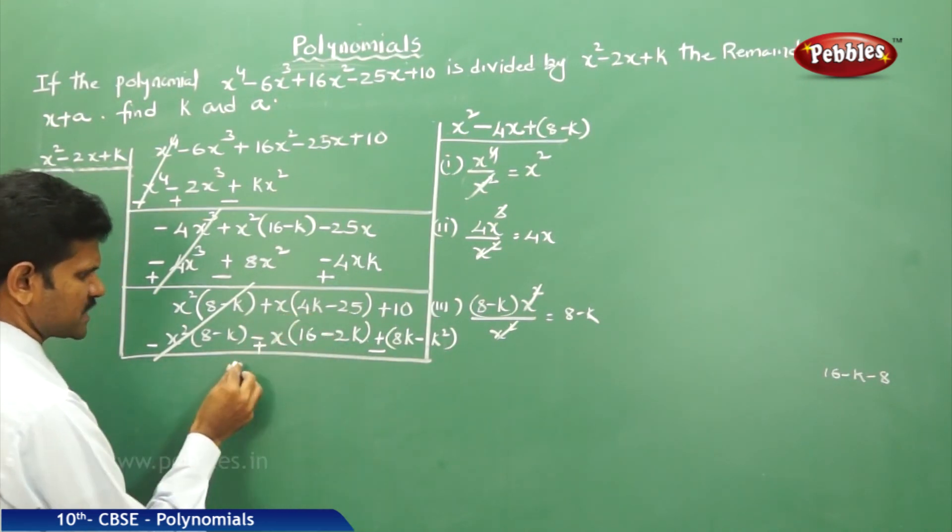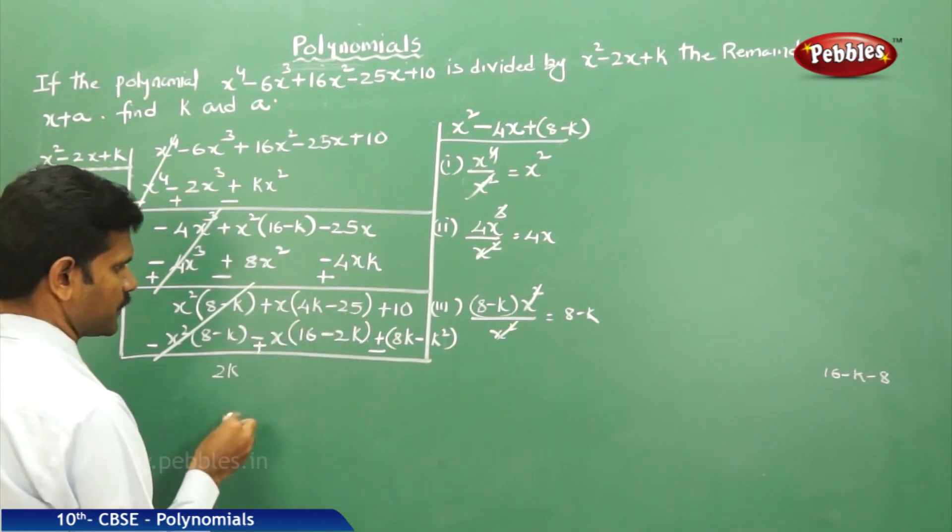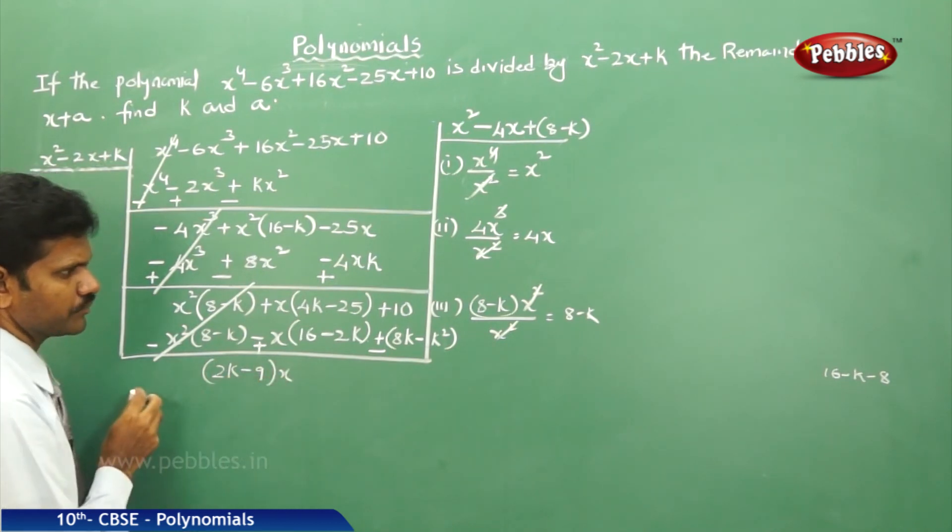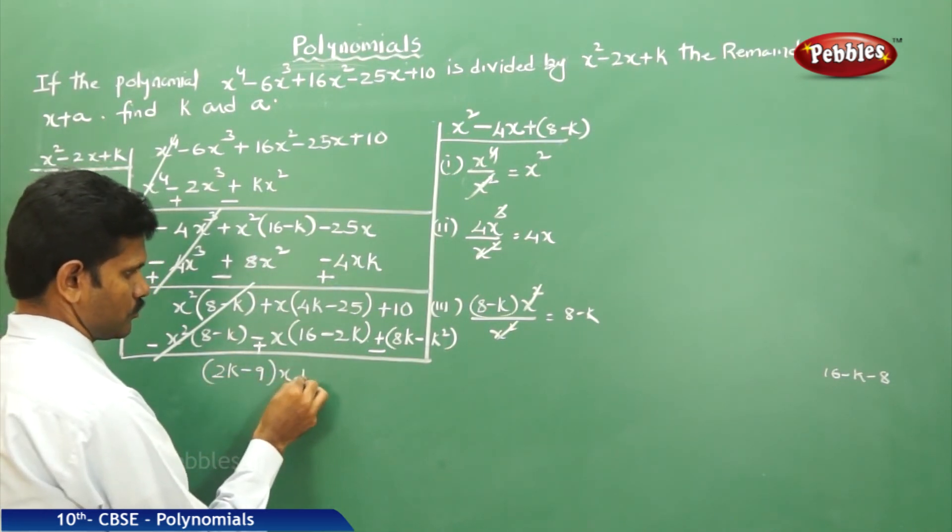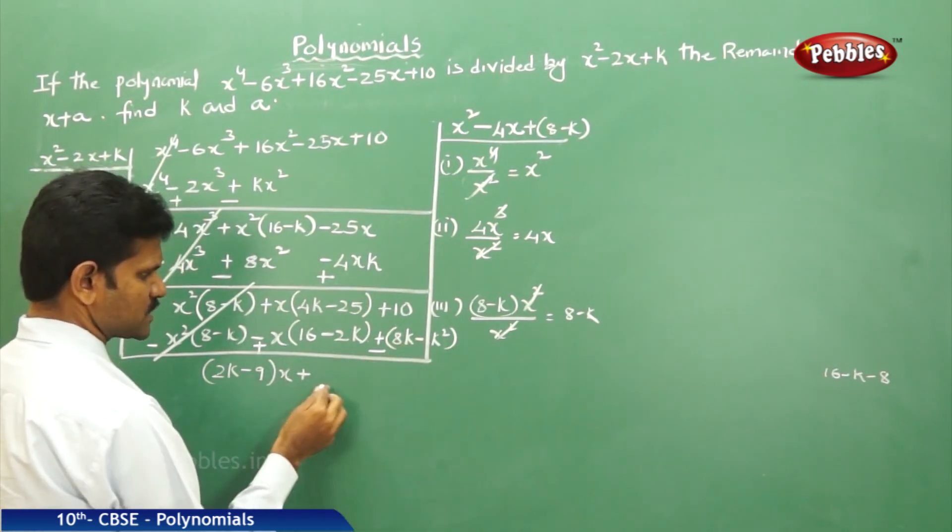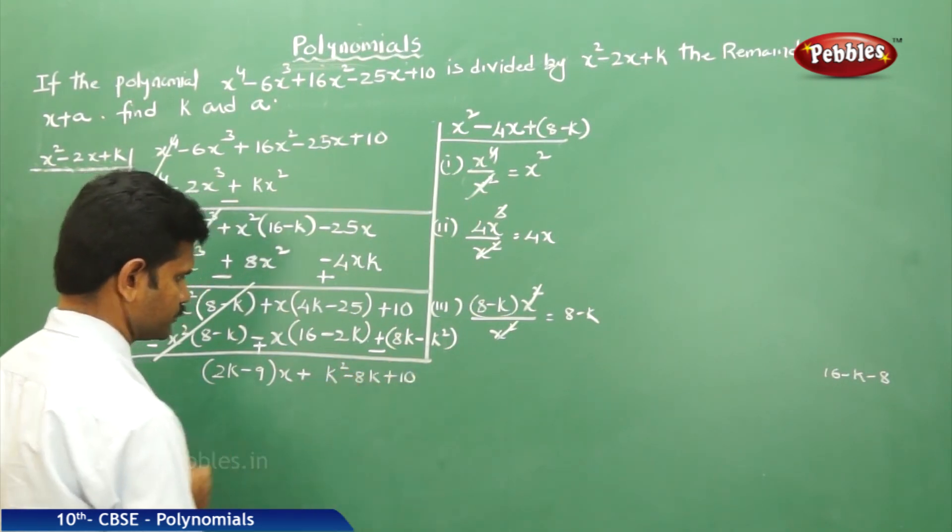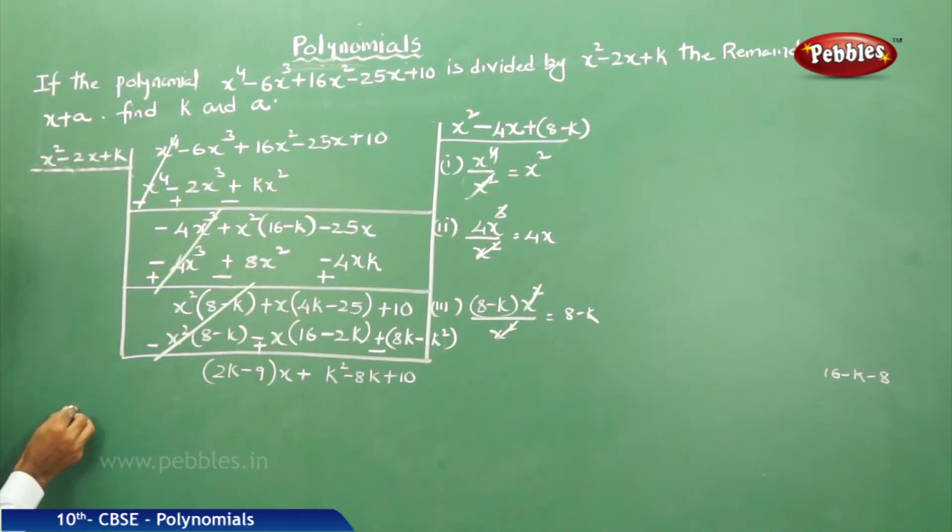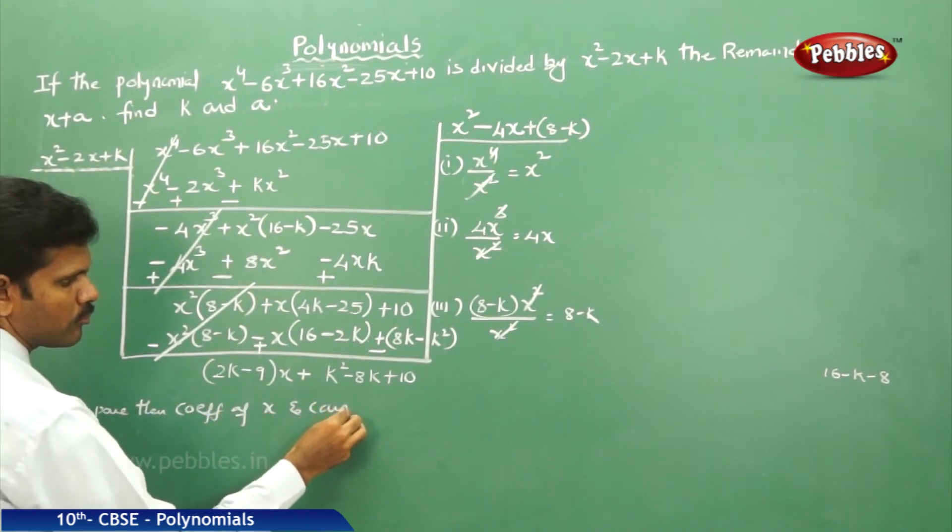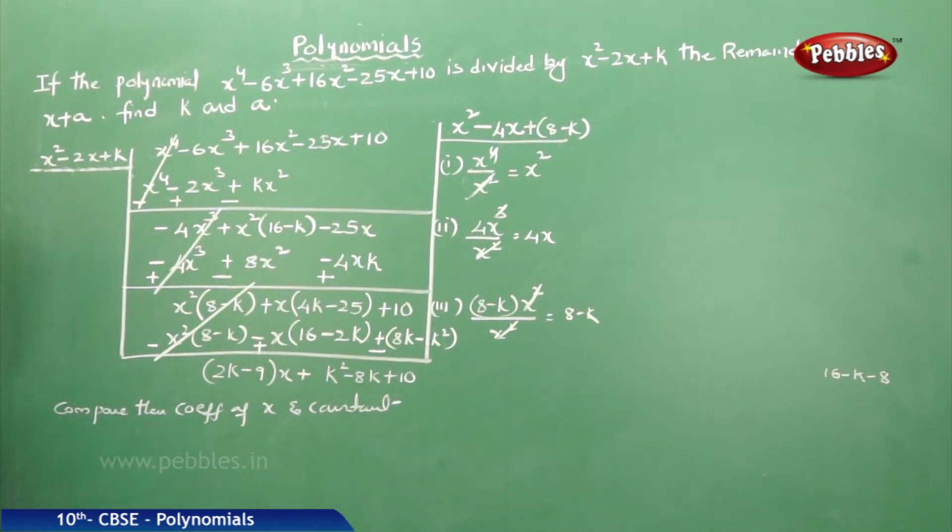Now see, minus 2k plus 4k gives 2k. Minus 25 plus 16 gives minus 9 into x. Next, plus, minus, minus into minus plus, k² minus 8k plus 10. Now compare the coefficients of x and constant. That is 2k minus 9 is equal to 1. 2k is equal to 1 plus 9. 2k is equal to 10. That is k is equal to 5.